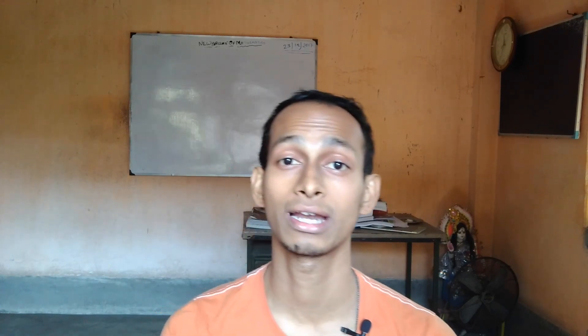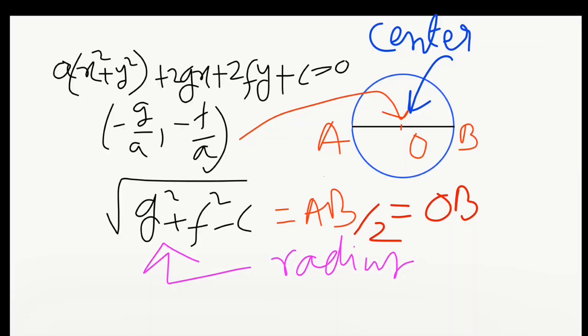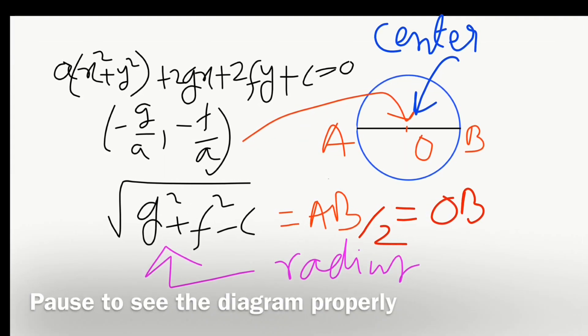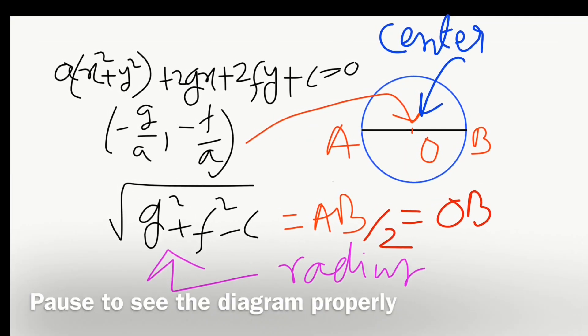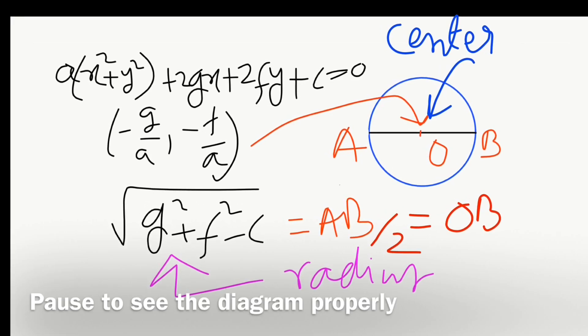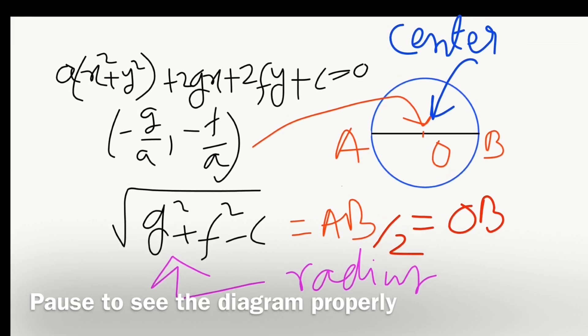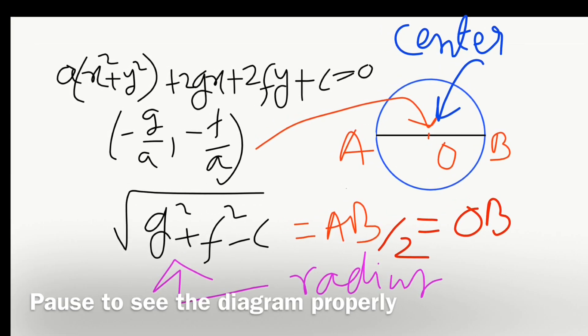When the coefficient of x squared and y squared is the same — for example, if the coefficient of x squared is 2, then the coefficient of y squared must also be 2 — so if both coefficients are exactly the same, including the sign, then it will be the equation of a circle.